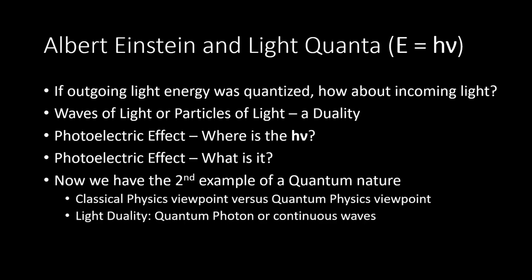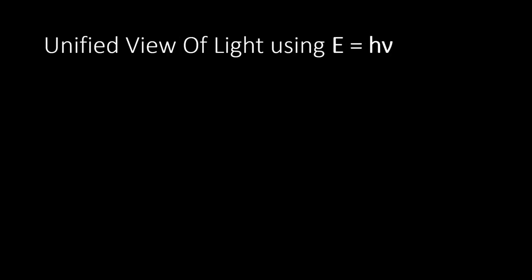Now you can see the problem with the equation for the photoelectric effect and the overall equation for the energy of a photon. We have a second example of quantum theory explaining natural phenomena. This was another step in physics splitting between a classical view versus the new quantum view. But if all of this is wrong, what is the right answer? For that, we'll look at a unified view of light using E equals hν.